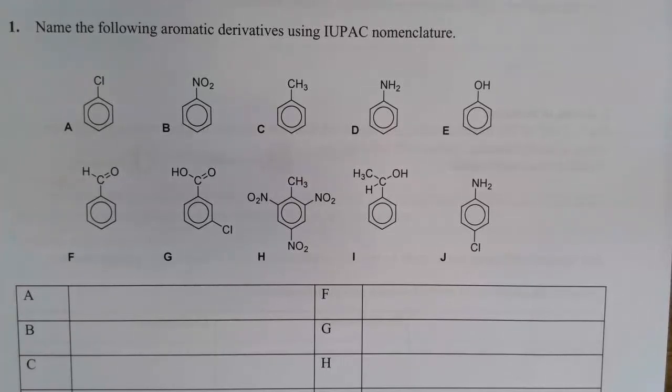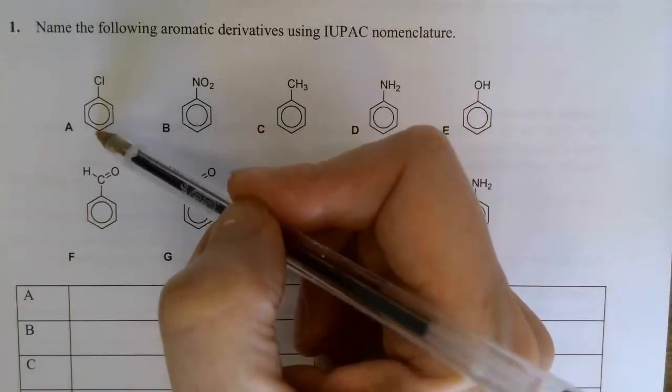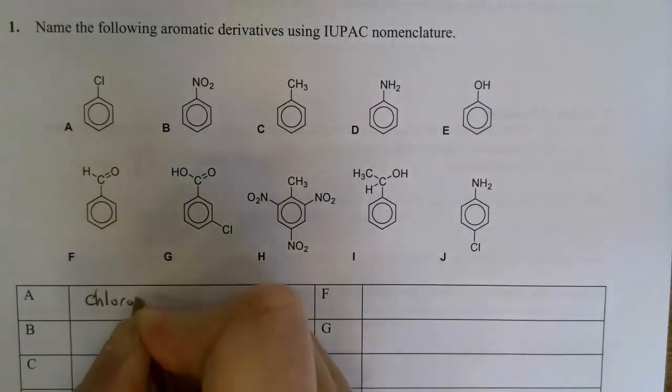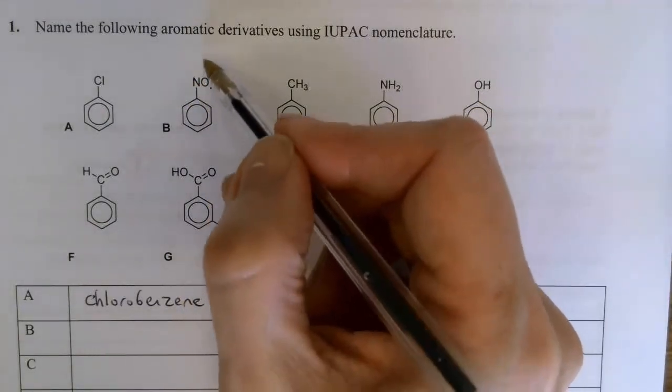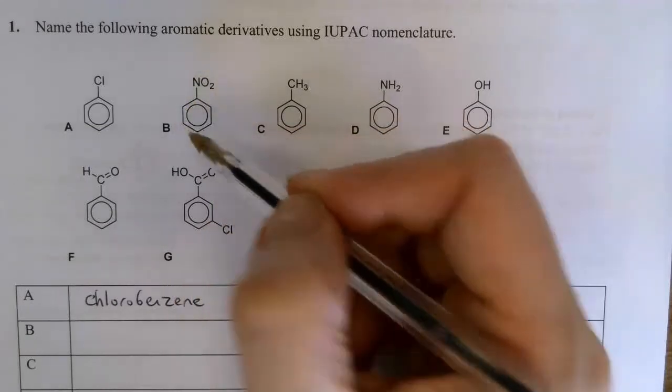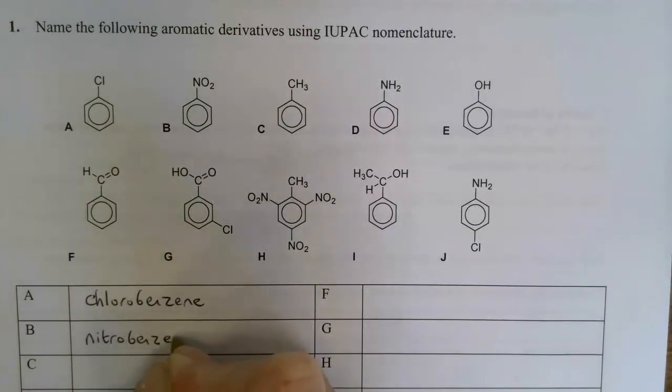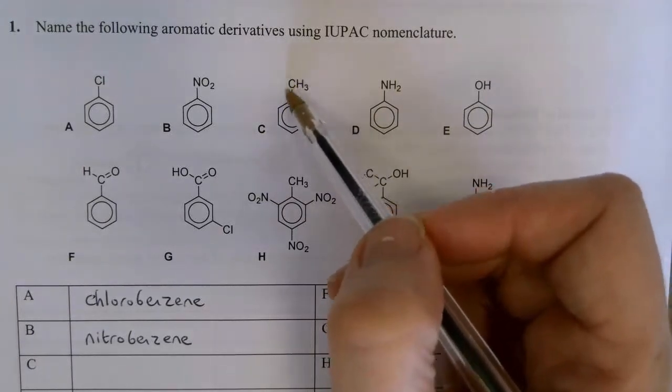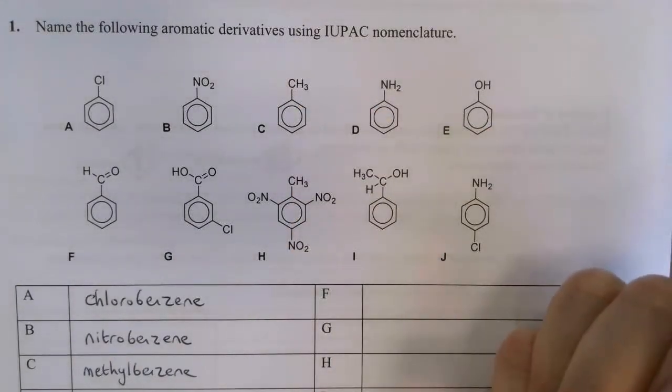Okay, so we're going to go through them one by one. Most of them are very straightforward. First one, you've got a chlorine attached to the benzene ring. There's only one substituent so this is simply chlorobenzene. The second one, B, I've got an NO2 group. This is what's called a nitro group. Again it's the only substituent and it's attached to the ring, so this would be nitrobenzene. C here, you've got an R group on the benzene ring. This time it's methyl, so unsurprisingly this becomes methylbenzene.